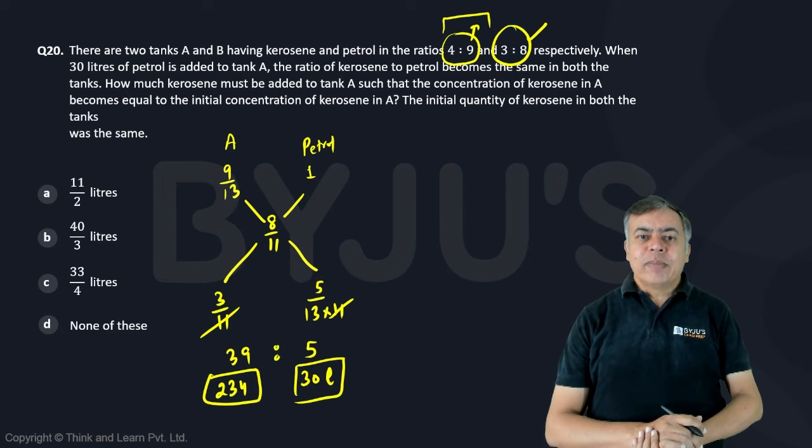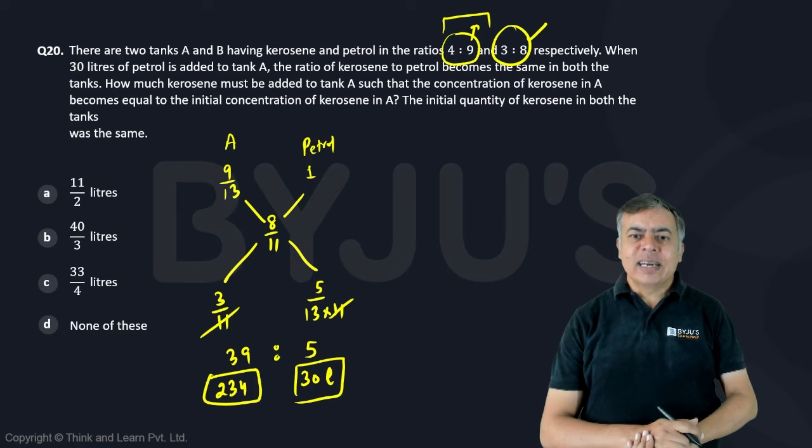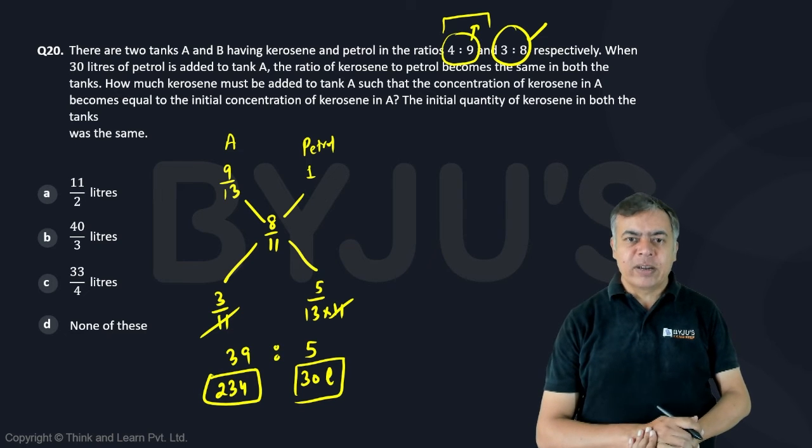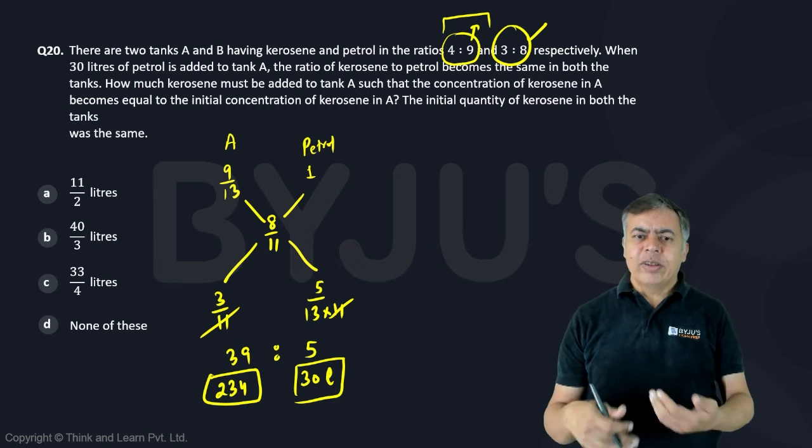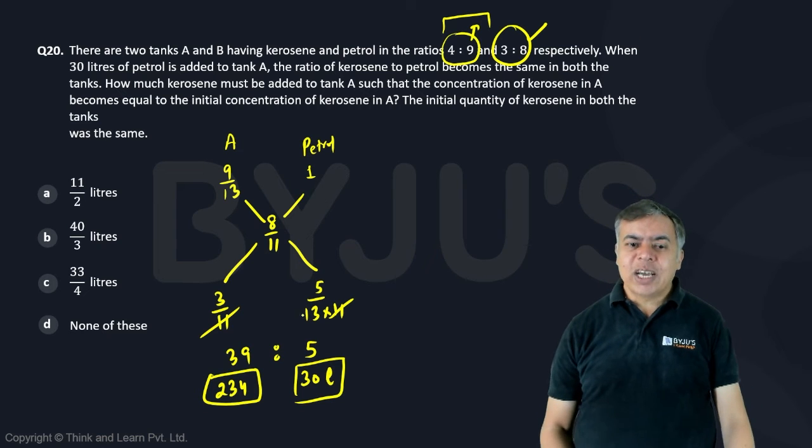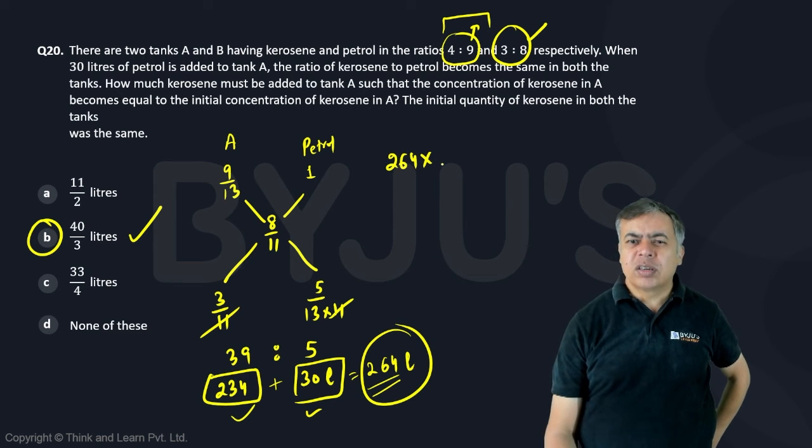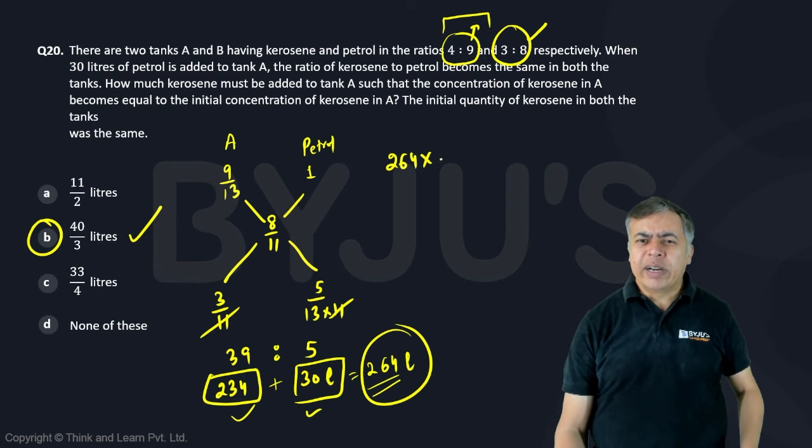How much kerosene must be added to tank A such that the concentration of kerosene in A becomes equal to the initial concentration of kerosene in A? So now you are saying that how much I should add it to get back the ratio. So we have 264 litres. How much you can calculate any one of them.